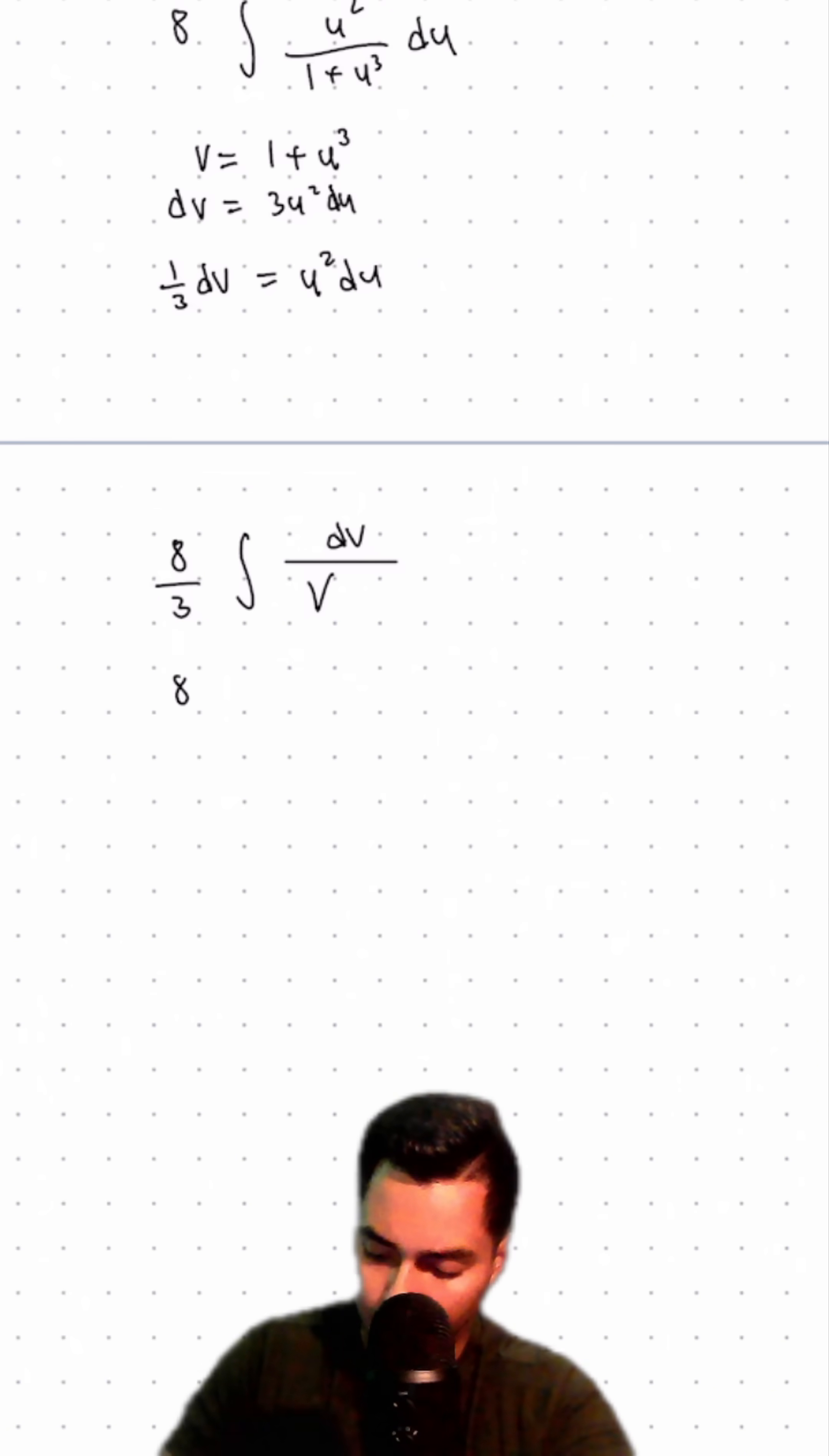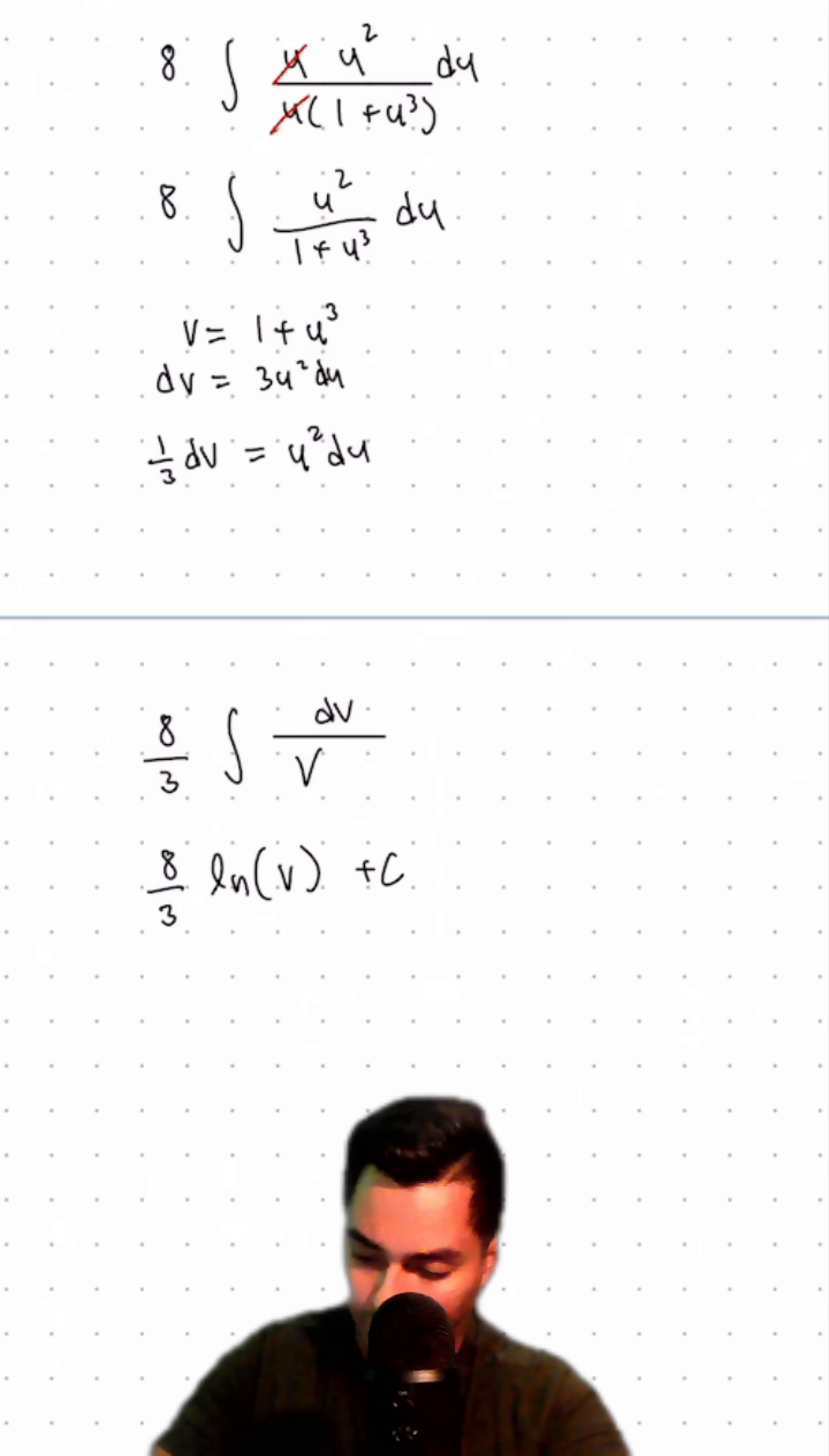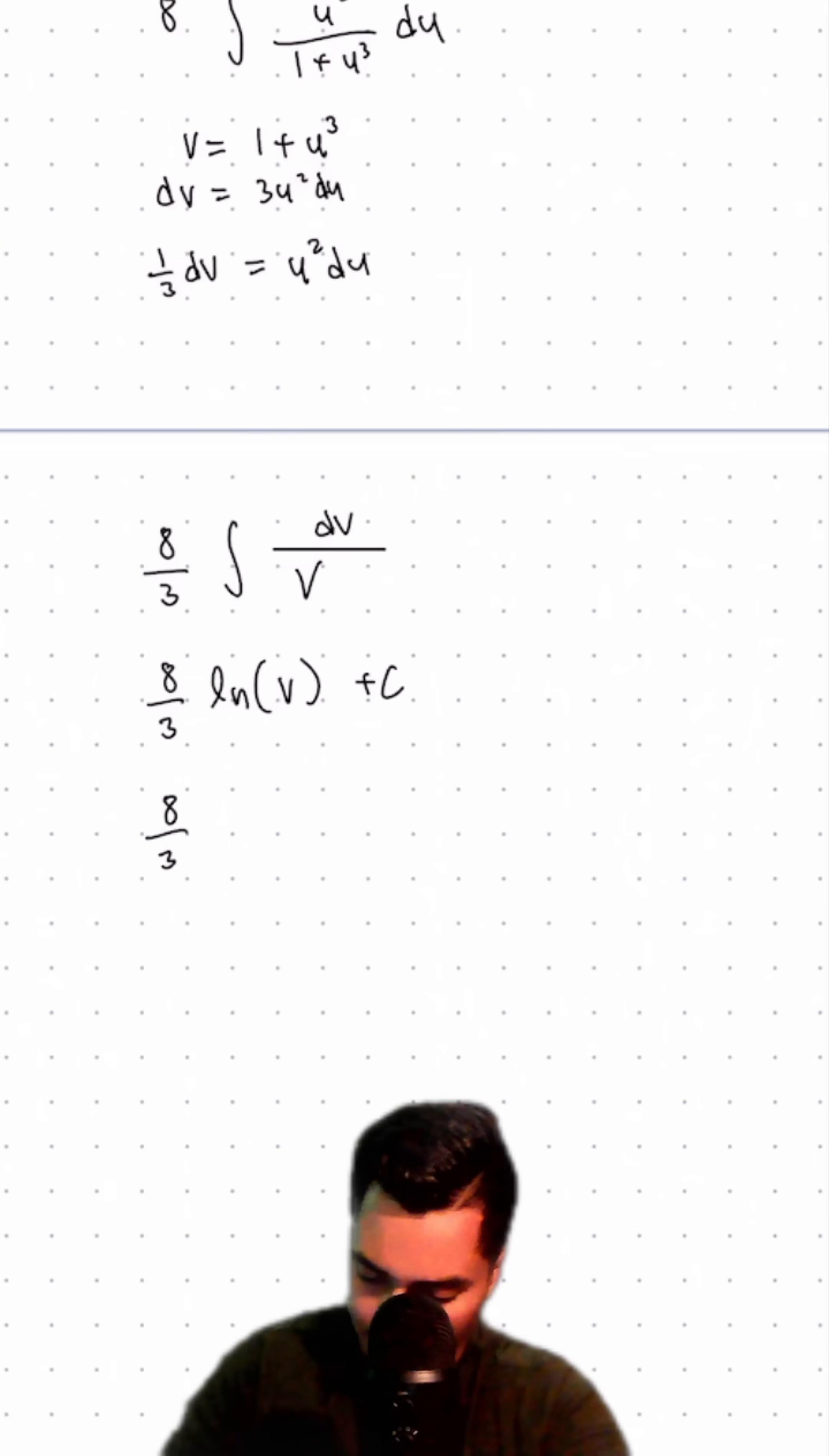This evaluates to 8/3 times the natural log of v plus c. Our v was 1 plus u cubed, so 8/3 times the natural log of 1 plus u cubed plus c.